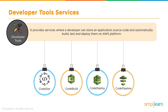Developer tool services in Amazon provide services where developers can store application source code and automatically build, test, and deploy applications on AWS. AWS CodeStar enables us to quickly develop, build, and deploy applications. CodeBuild is a fully managed build service that compiles source code, runs tests, and produces software packages ready to deploy. CodeDeploy automates software deployments to a variety of compute services including Amazon EC2, Lambda, and even on-premises instances.